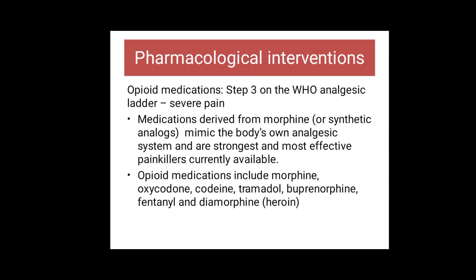Opioid drugs can be classified as natural, semi-synthetic, or synthetic. Semi-synthetic opioids are derived from naturally occurring compounds, while fully synthetic opioids mimic the body's endogenous analgesic system and are used to manage moderate to severe pain.